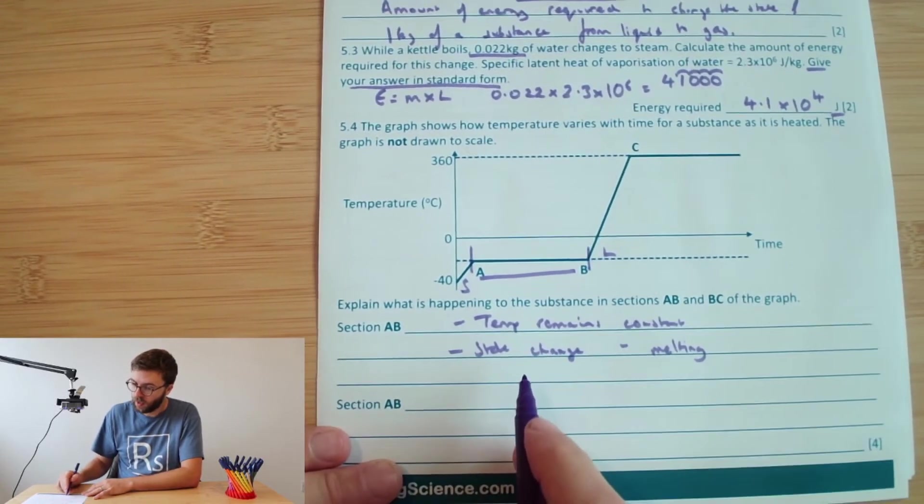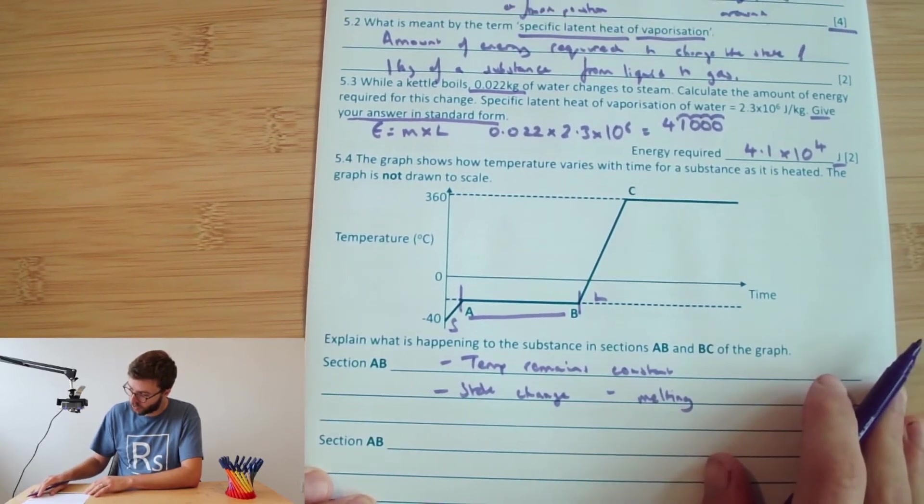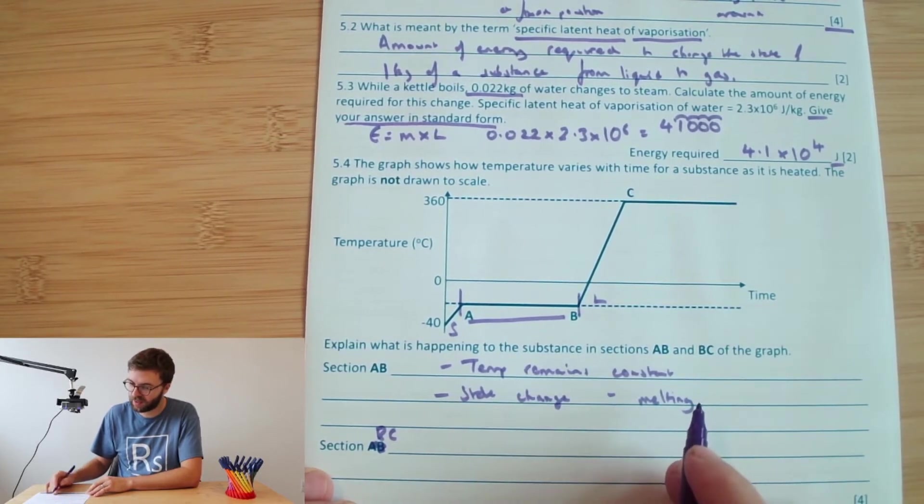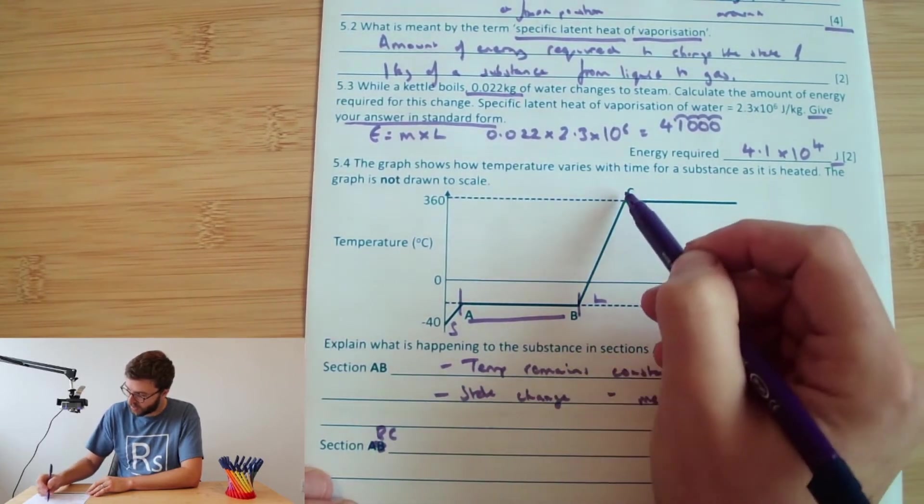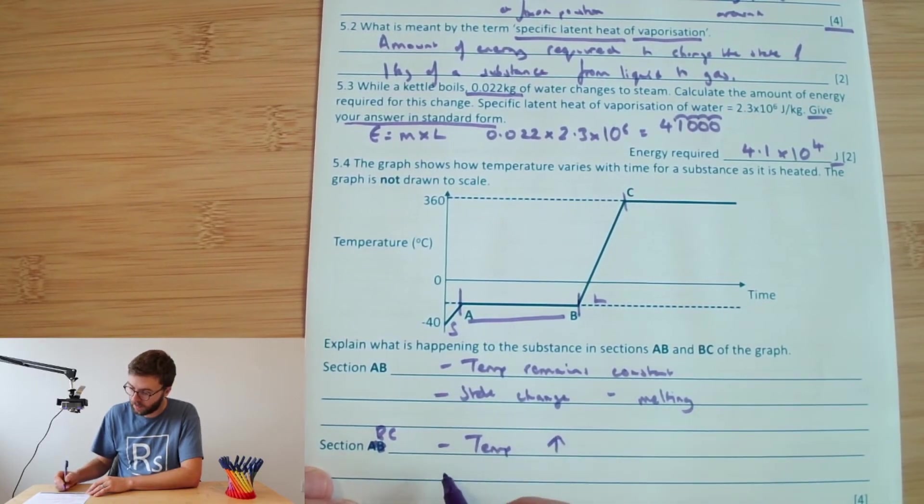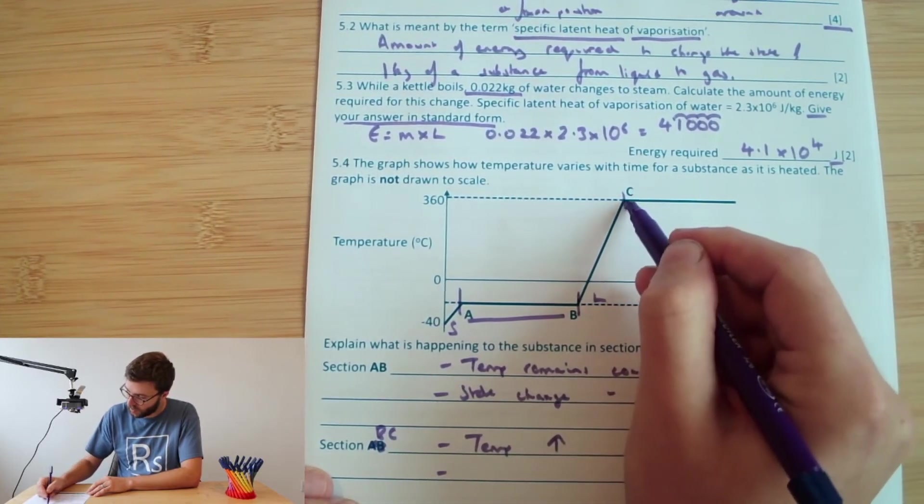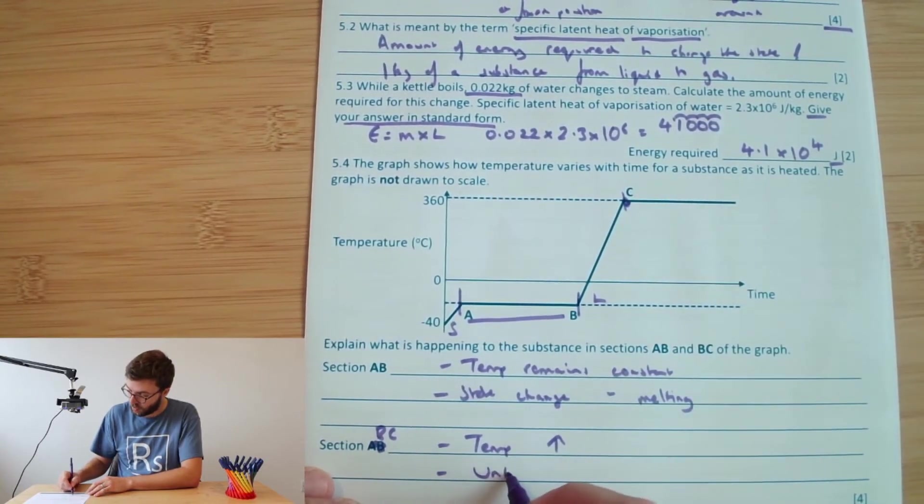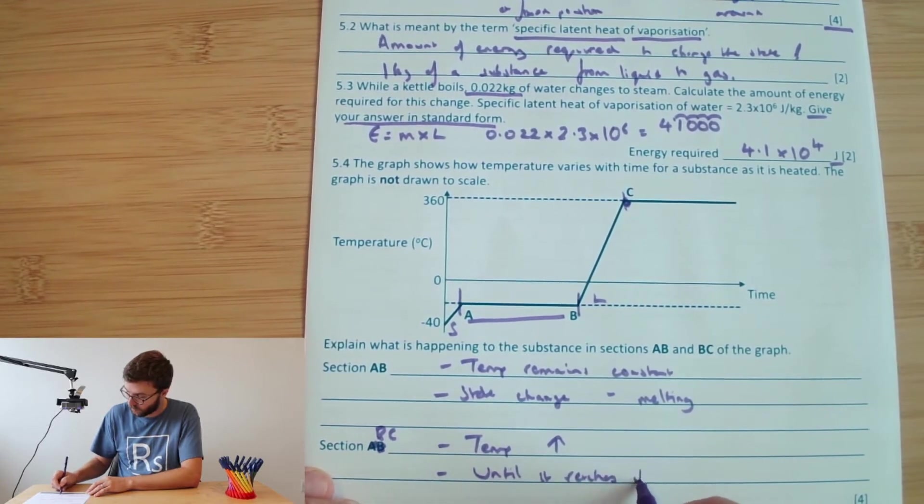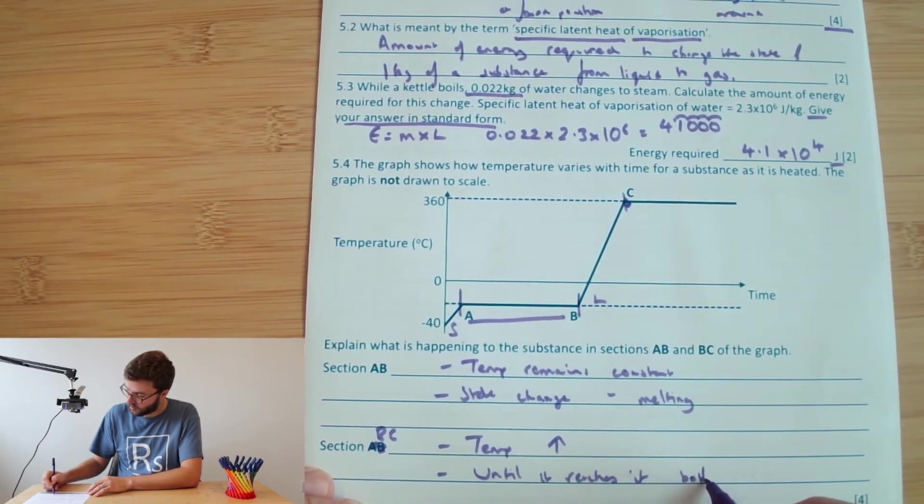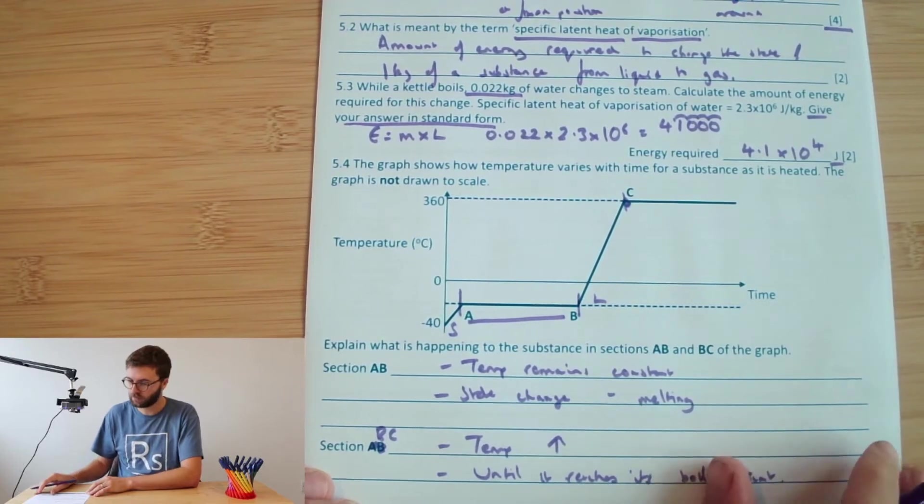We could estimate the temperature if we need to but for four marks, we've got our two points. Then we want to look at what's happening in section BC. So let's have a look from B to C. Well, we can quite clearly see that the temperature is increasing here until it reaches C. And this must be the change from liquid to gas. So until it reaches the temperature which something changes from a liquid to gas, until it reaches its boiling point.